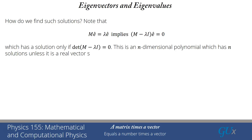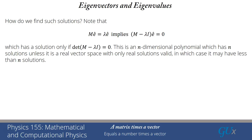We have to have the determinant of (M minus lambda I) equals zero, otherwise we don't have a valid non-trivial solution. If you work out that determinant as a function of lambda, you'll find it's an n-dimensional polynomial in lambda. An n-dimensional polynomial in lambda will have n solutions in a complex vector space. In a real vector space, looking only for real solutions, there may be fewer than n solutions — just as with quadratic equations, you might get complex roots.